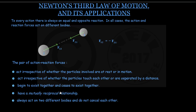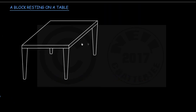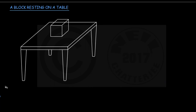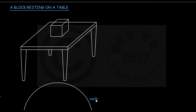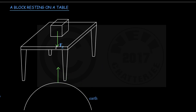Now we are ready for the first example: a block resting on a table. Here is a table, a block sitting on it, and part of the earth shown as a representative figure. The earth exerts a force of gravity on the block in the vertically downward direction — we call that force Fg. As a reaction, the block also exerts an equal and opposite force on the earth, with the same magnitude as Fg but acting upwards — I am calling it minus Fg.